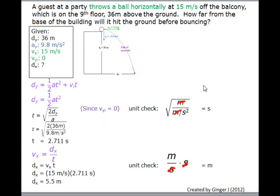Then since horizontal velocity doesn't change and we have the time, we can use this equation to find dx. Isolate the variable, plug in the numbers and units, and dx is 5.5 meters.